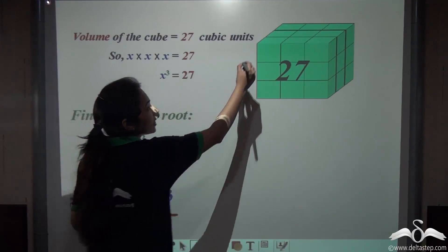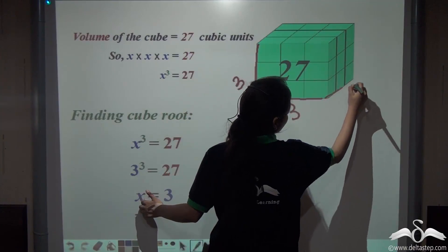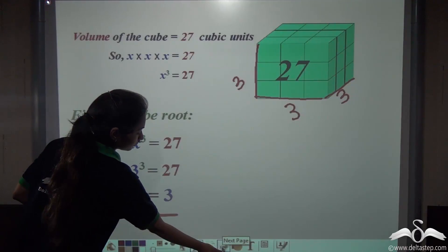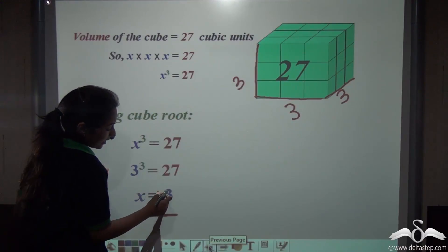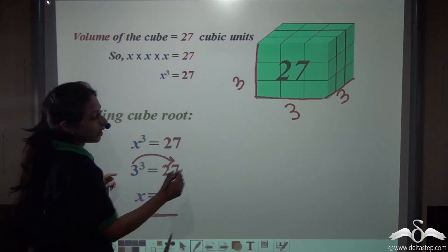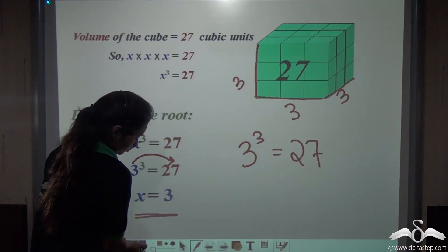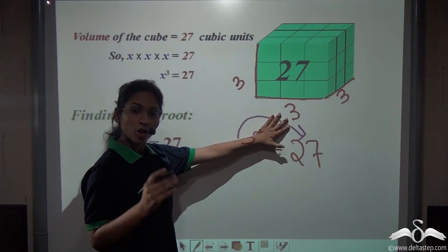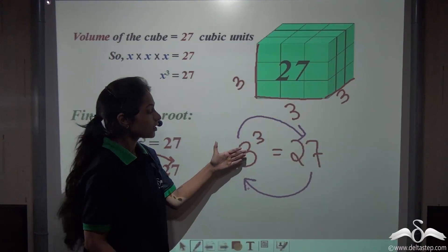So we found out each edge or each side of this cube. We can say that the cube of 3 is 27. The inverse operation of a cube is cube root, so the cube root of 27 is 3.